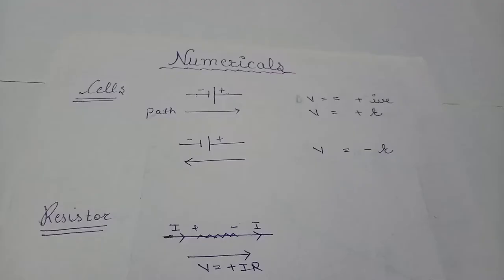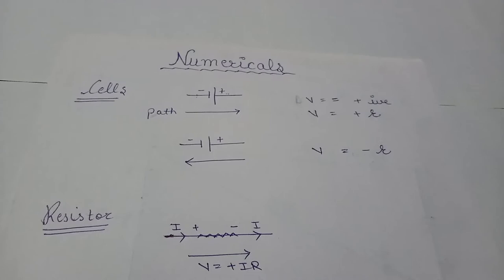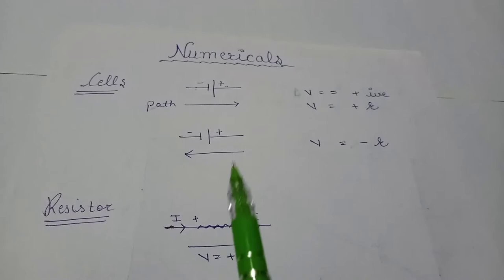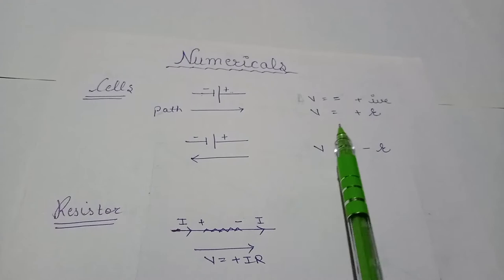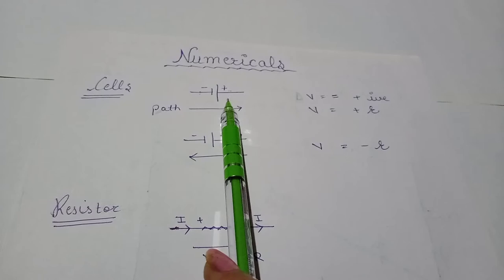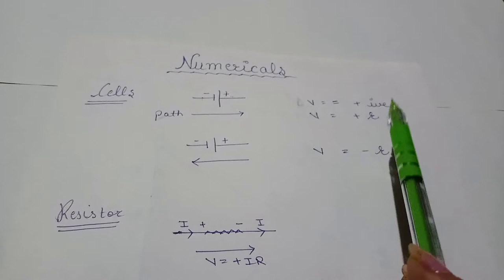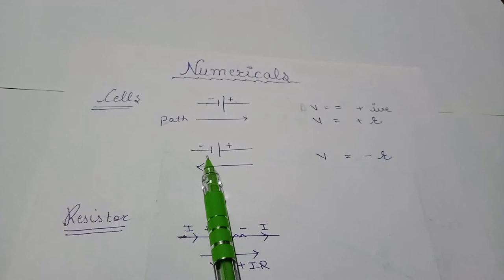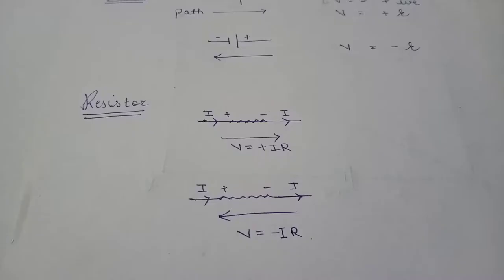For solving the numericals, dear students, we need to remember only two points. The first point is regarding the cell. Whenever we are going from negative to positive terminal, in that case we take EMF as positive. And when we are going from positive to negative, how do we take EMF? Negative.